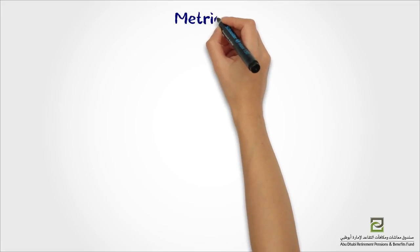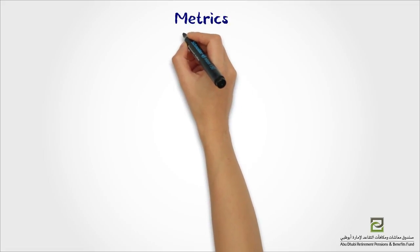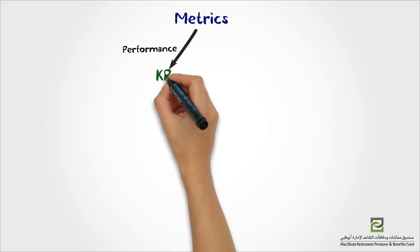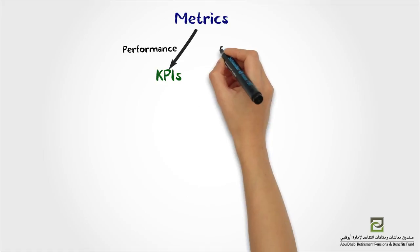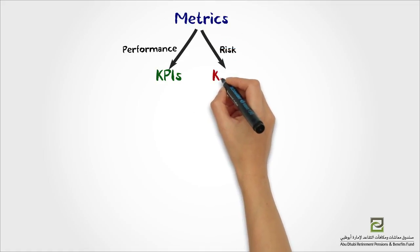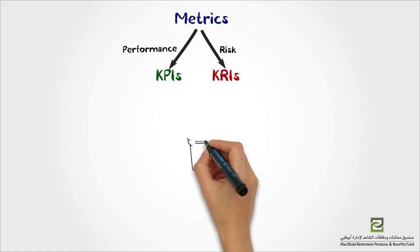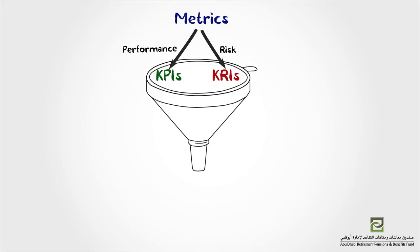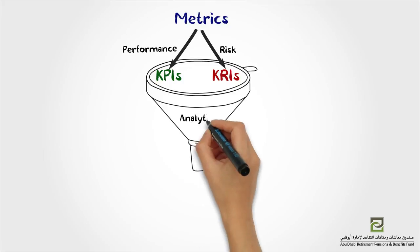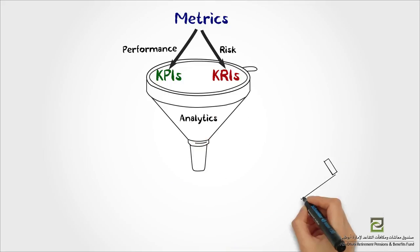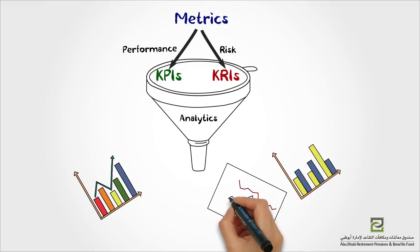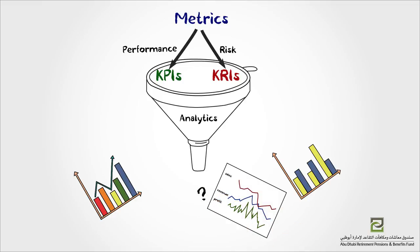In conclusion, everything we measure is a metric. If it reflects performance, it becomes a KPI. If it reflects risk, it becomes a KRI. With all of these tools — metrics, KPIs, and KRIs — we can do analytics to explore trends, data patterns, and interdependencies, all for supporting better decision-making and ultimately the achievement of desired results.